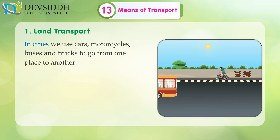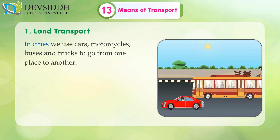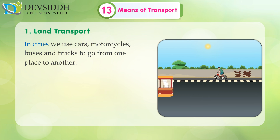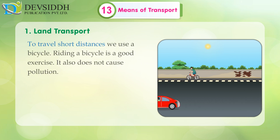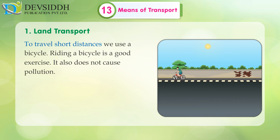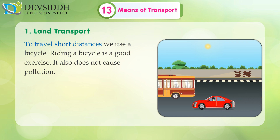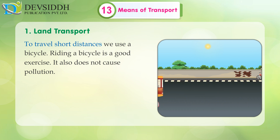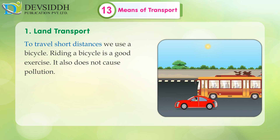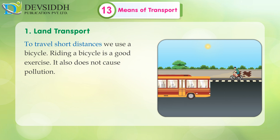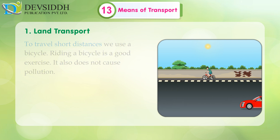In cities, we use cars, motorcycles, buses and trucks to go from one place to another. To travel short distances, we use a bicycle. Riding a bicycle is a good exercise and it also does not cause pollution.